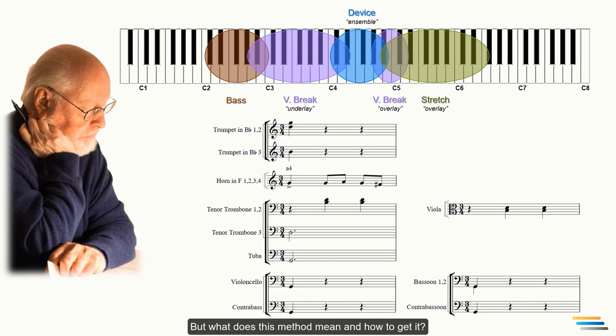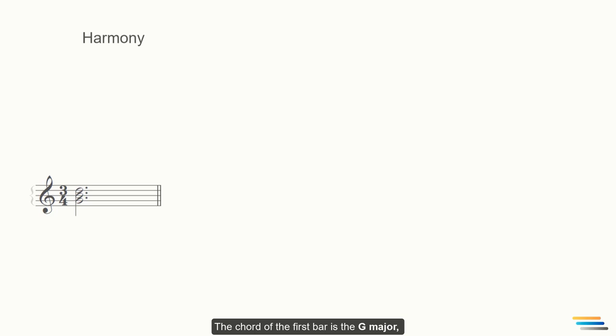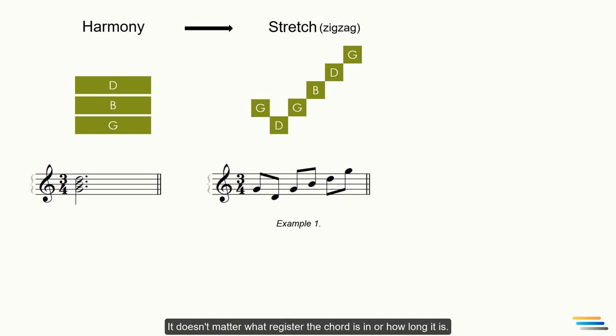But what does this method mean and how to get it? First, we will look at the chord tones of the given harmony. The chord of the first bar is the G major and it consists of notes G, B, and D. If you want to apply the stretch method to the harmony, then you should arrange the chord tones one after the other, not all at once. It doesn't matter what register the chord is in or how long it is. You can transform the chord to any form and register based on the tones in the chord.